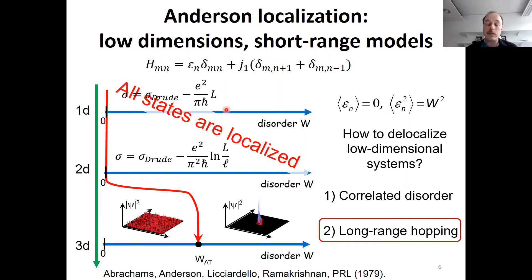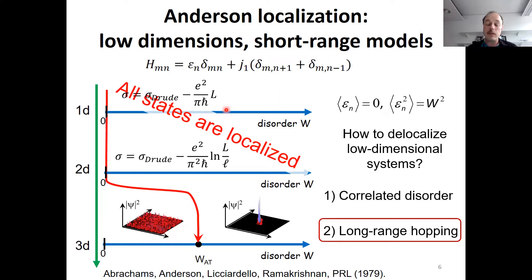To my knowledge, there are at least two ways to restore the Anderson transition. You can affect the diagonal term — as we heard in the previous talk by Coolerich: with quasi-periodic, not truly random but quasi-periodic correlated disorder, you can have a transition already in 1D, as in the Aubry-André model. Another approach, which I focus on, is to make the hopping term long-range.